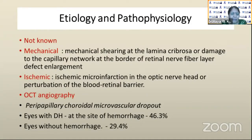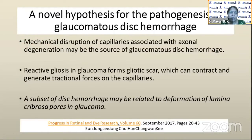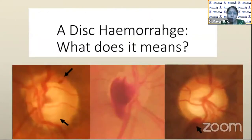What is the exact etiopathology? It's not well understood still, but theories of mechanical or vascular ischemic damage have been put forward. With OCT angiography, we know there is a peripapillary choriocapillaris microvascular dropout seen in glaucoma patients. Eyes that had a disc hemorrhage showed this dropout at the site of hemorrhage in 46%, while eyes without hemorrhage showed it in almost 30%. So a subset of disc hemorrhage may relate to deformation of the lamina cribrosa in glaucoma due to reactive gliosis and gliotic scar formation which pulls this area.